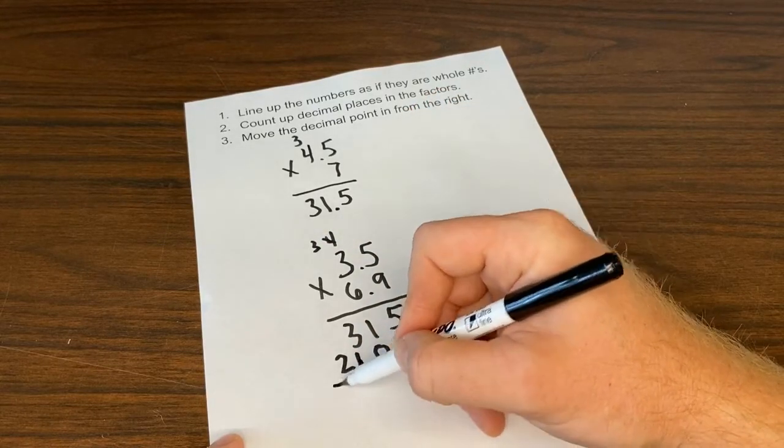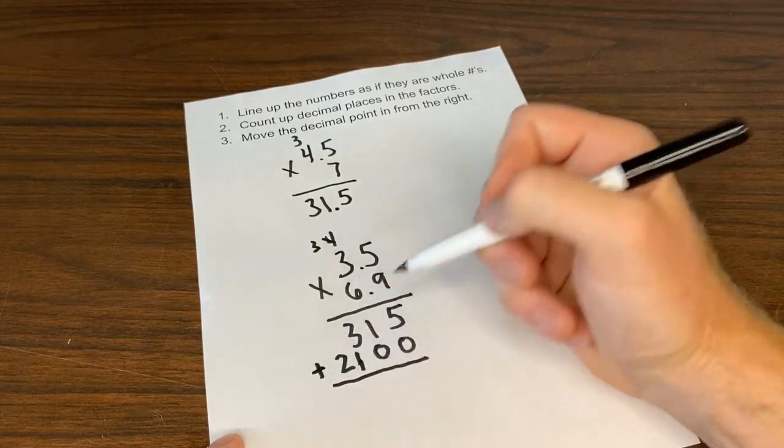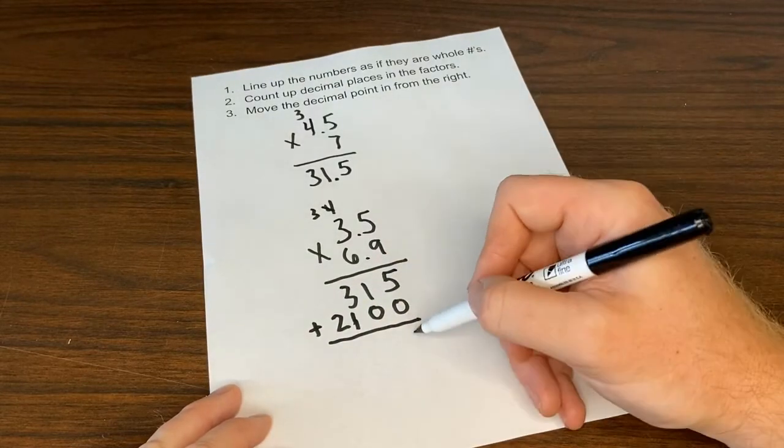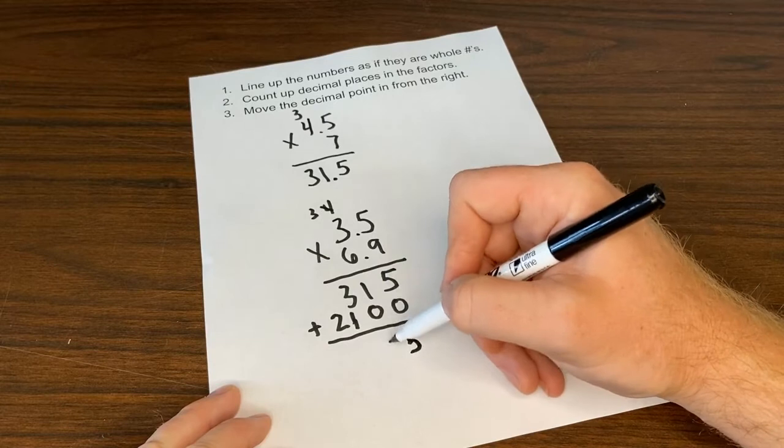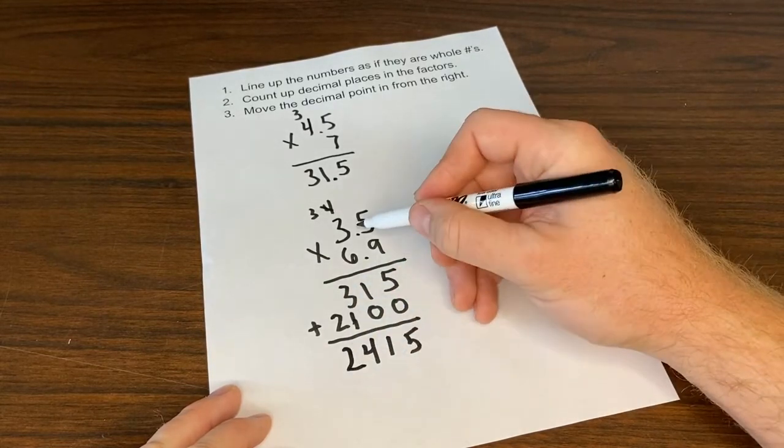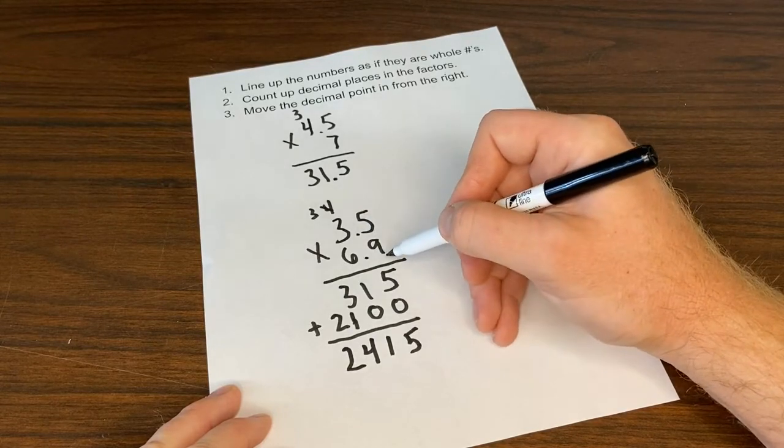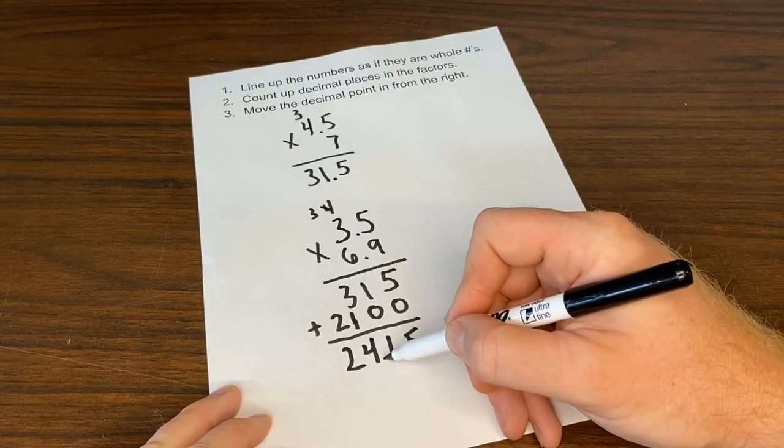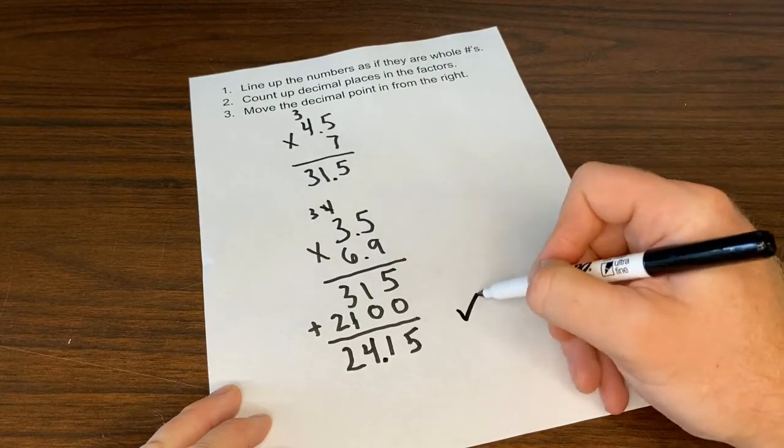I add the two numbers. Again, I'm multiplying just like these are whole numbers. 5 plus nothing is 5. 1 plus nothing is 1. 3 plus 1 is 4. And 2 plus nothing is 2. I have one, two decimal places in my factors. So I move it in two jumps for my product, 24.15.